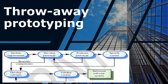The second type of prototyping is throwaway prototyping. A practical implementation of the system is produced to help discover requirement problems and then discarded. The system is then developed using some other development process. Throwaway prototyping is used to reduce requirements risk. The throwaway prototype should not be considered as a final system — some system characteristics may have been left out, there is no specification for long-term maintenance, and the system will be poorly structured and difficult to maintain.